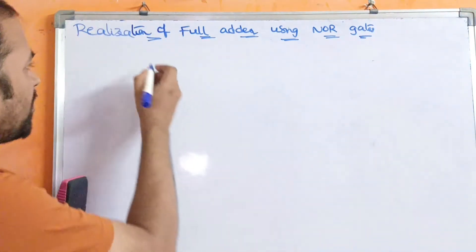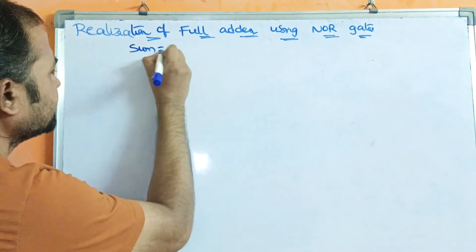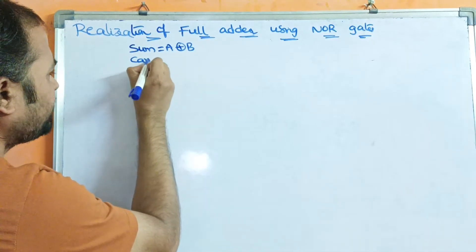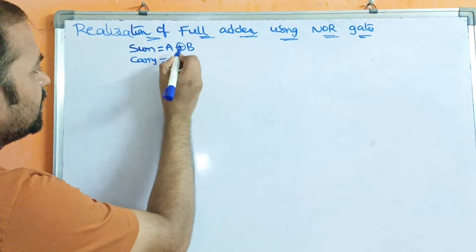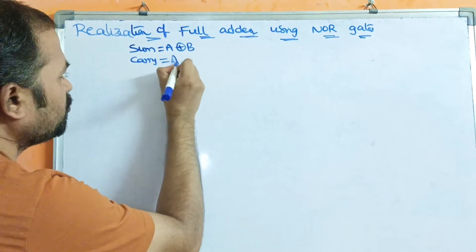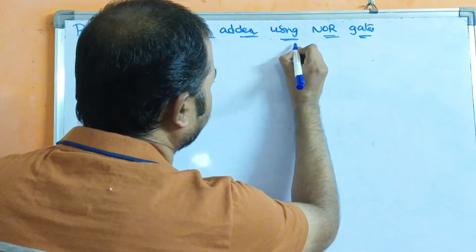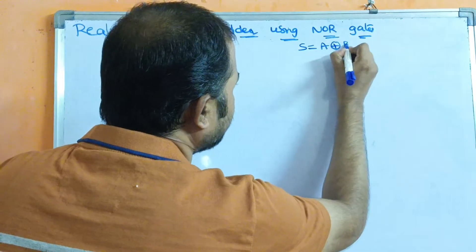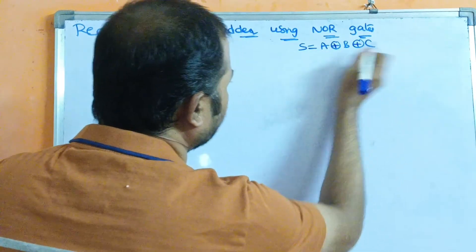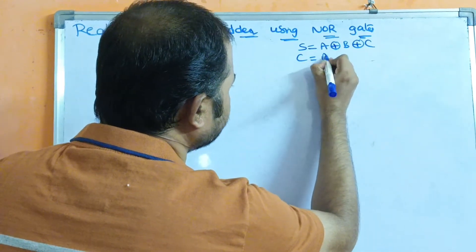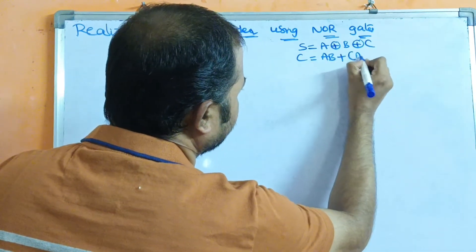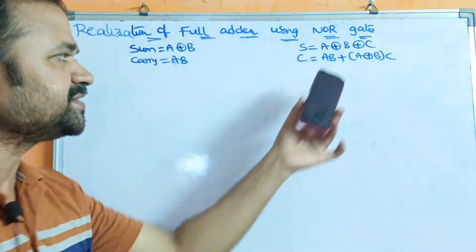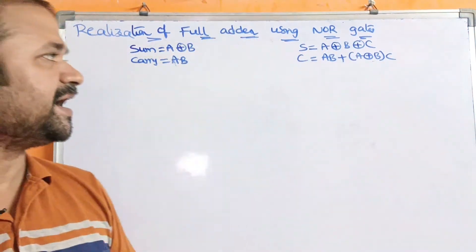We know that in half-adders, the result of sum is A exclusive-or B, whereas the result of carry is A·B. In a full adder, the expression for the sum is A exclusive-or B exclusive-or C, whereas the expression for the carry is AB plus (A exclusive-or B)·C.